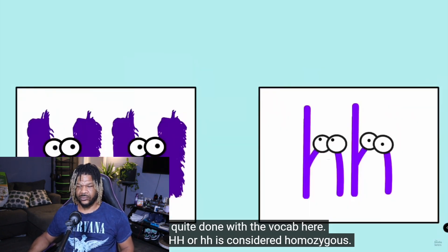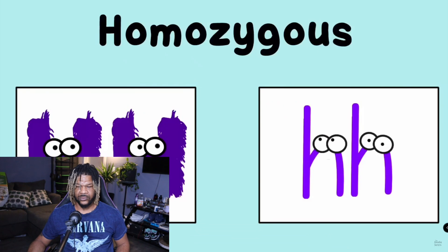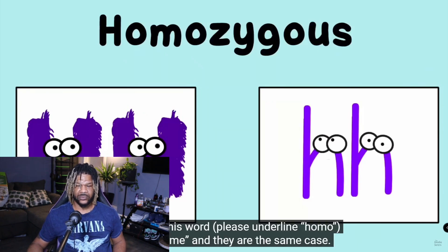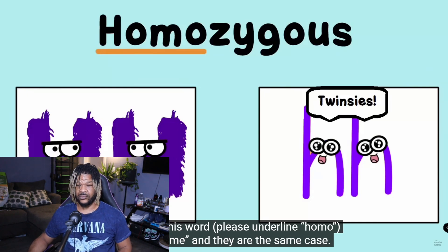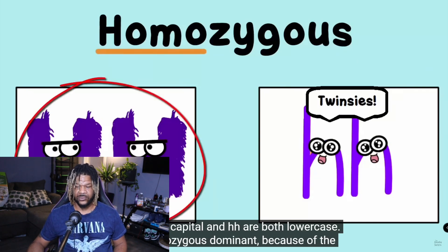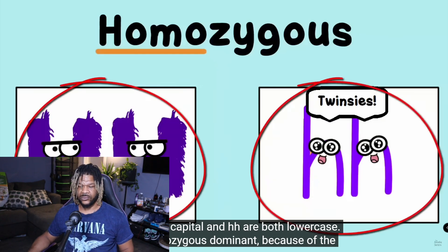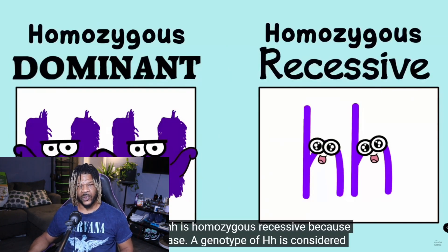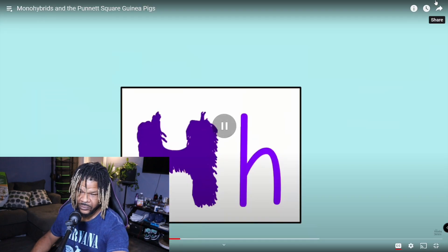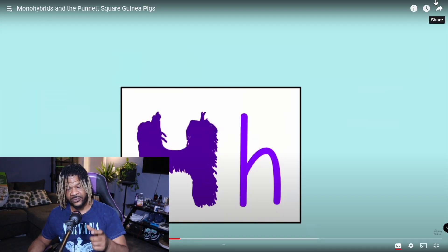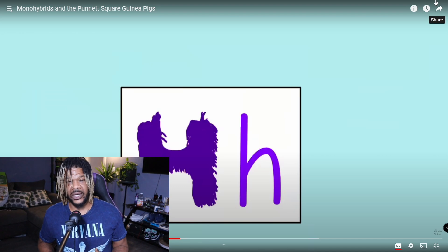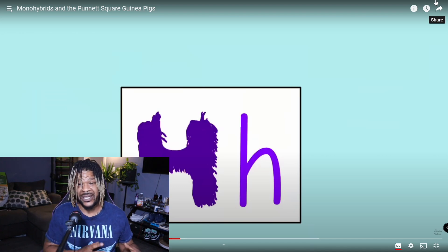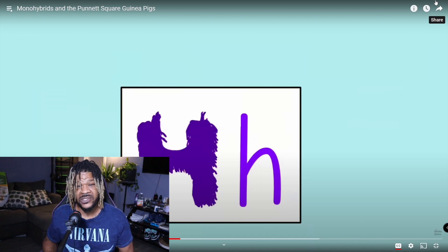A genotype of HH or hh is considered homozygous. The root in this word means 'same' — HH are both capital letters, hh are both lowercase. HH is called homozygous dominant because of the capitals, and hh is homozygous recessive because of the lowercase. A genotype of Hh is considered heterozygous — the root means 'different' because the letter cases are different. You're learning the importance of distinguishing heterozygous versus homozygous alleles.